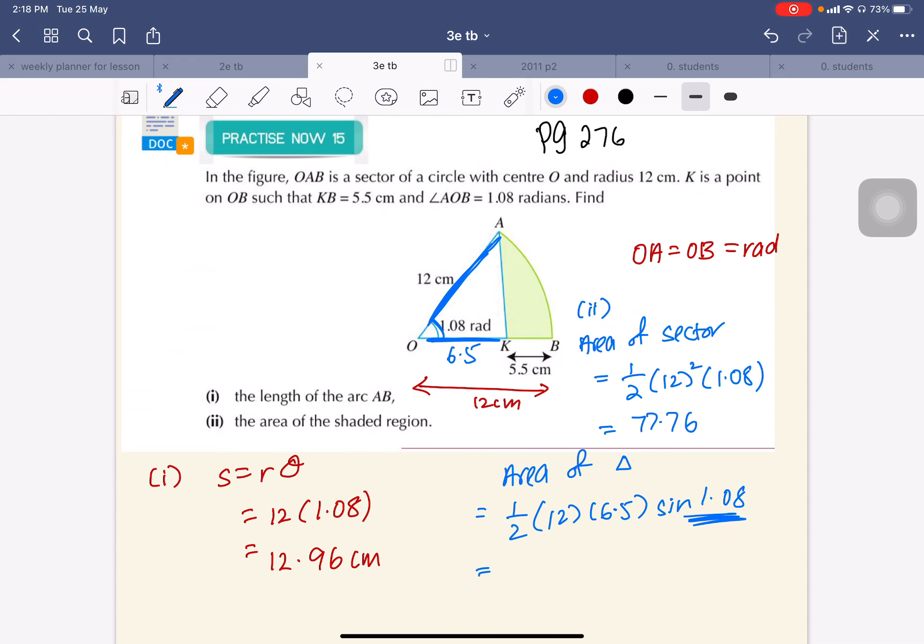So now, half times 12 times 6.5 times sine 1.08. My answer is 34.3964.